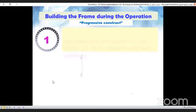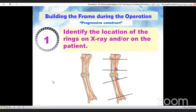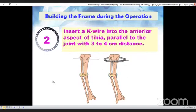Step one, identify the location of the ring on x-ray and on the patient. Step two, insert the guide key wire into the tibia parallel to the joint.